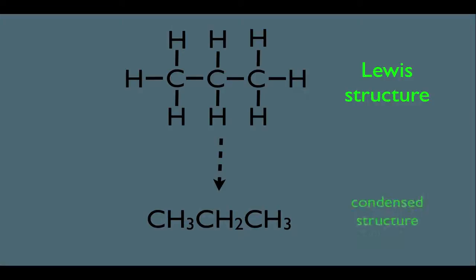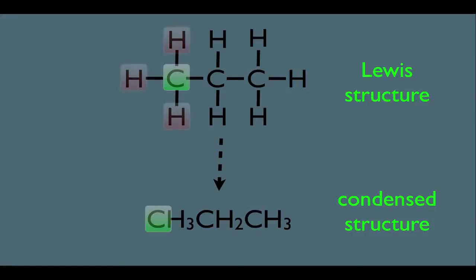First of all, this is called the condensed structure, and it's very simple. All we're saying is that this carbon right here is this carbon here, and the three hydrogens attached to the carbon are simply condensed or collapsed to right here. Looking at the representation below, we'd have to know that those three hydrogens are connected to the carbon to the left.